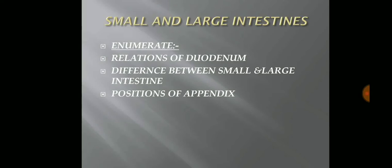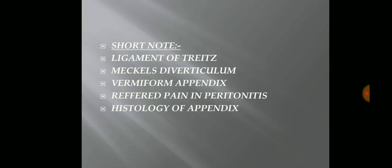Moving to the small and large intestine chapter. Enumerate questions expected from this chapter are: relations of the duodenum — this is the most important one, and generally the question asked is to enumerate the relations of the second part of the duodenum. However, you should also learn the first, third, and fourth parts, as they can also be asked. Differences between the small and large intestine is a less important question. Positions of the appendix is also an important question and is generally asked. Short notes can come on the ligament of Treitz, Meckel's diverticulum, vermiform appendix — which is important — and referred pain in peritonitis and histology of the appendix, which is less important.